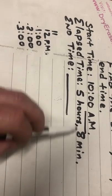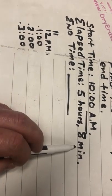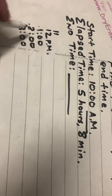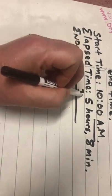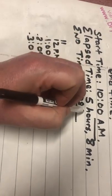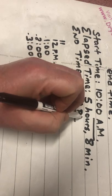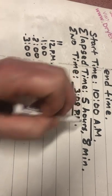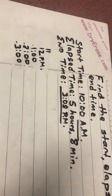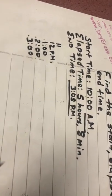But it says five hours and eight minutes, so it's not exactly 3 o'clock — it's really 3:08, and I want to remember to put p.m.